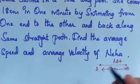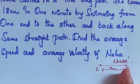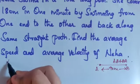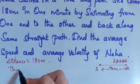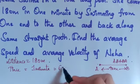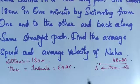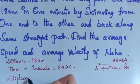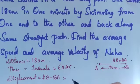She swam from A to B, then from B to A. That means A to B is 90 meters plus B to A is 90 meters, giving a total of 180 meters. So the distance traveled is 180 meters. Time taken to travel is one minute, which we convert to 60 seconds. Displacement equals AB minus BA, which is 90 minus 90, so displacement is 0 meters.